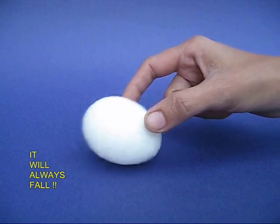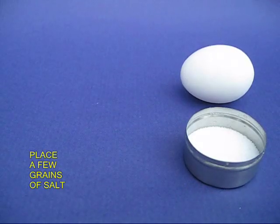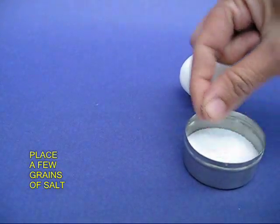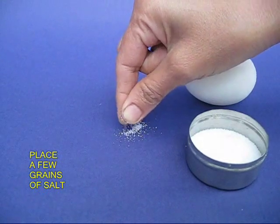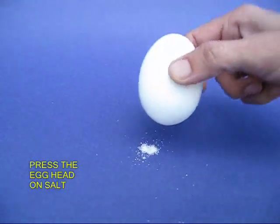Try to balance it on its narrow edge. It will again fall. But now you take a few crystals of salt and place them on a table, just a few crystals.